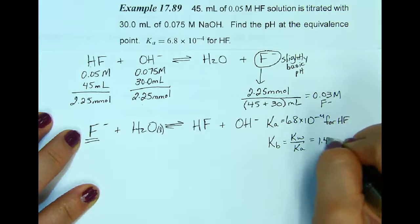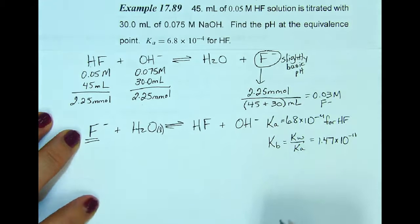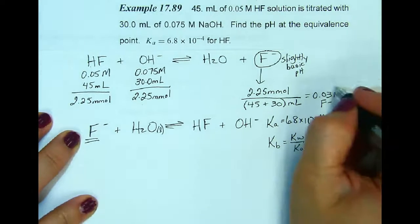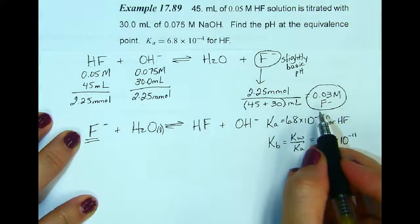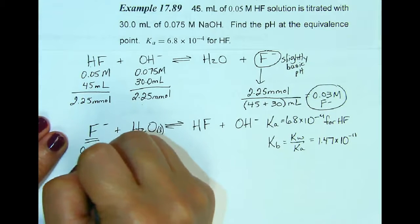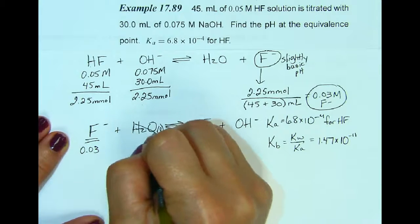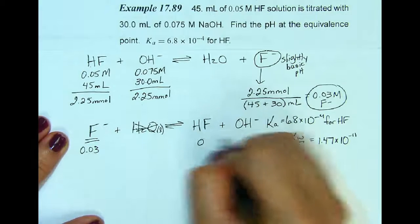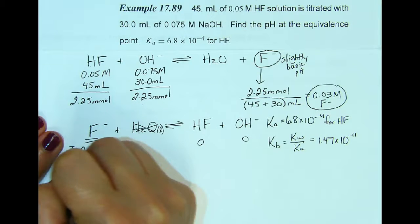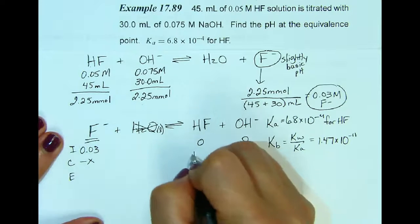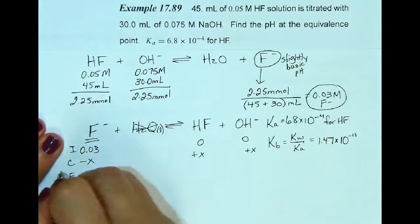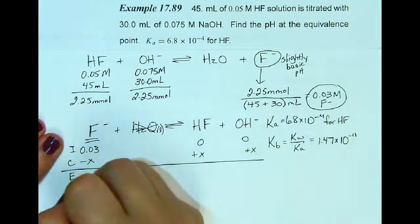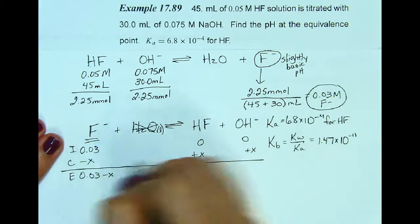So I'm going to do my ICE table with this as my initial concentration, 0.03, and we're not worried about the water and we'll get 0 and 0 for our products. The change is minus X plus X plus X and so at equilibrium we'll have 0.03 minus X, X and X.